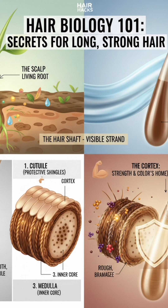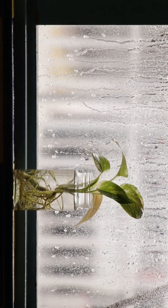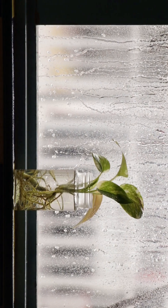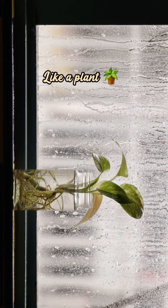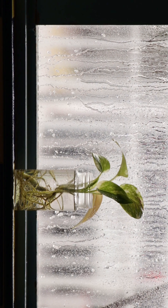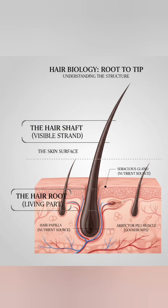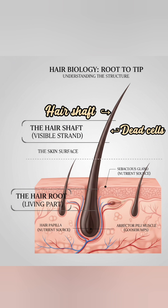Your hair has two main sections. Think of it like a plant — we have the part we can all see above the surface, and the part hidden beneath the soil, or in our case, beneath the skin. The visible part is called the hair shaft, and it's made up of dead cells.